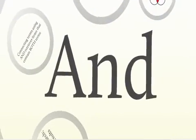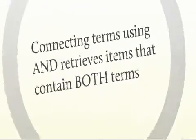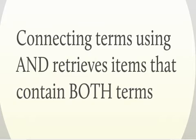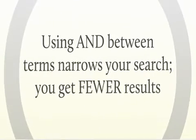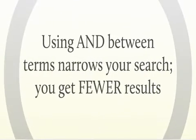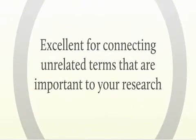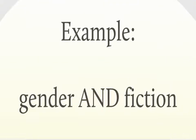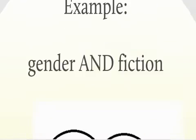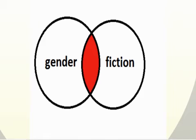AND functions in almost the opposite way. Connecting terms using AND retrieves items that contain both terms. Using AND between your terms narrows your search and you get fewer results. AND is excellent for connecting unrelated terms that are both important to your research. For example, 'gender AND fiction' will retrieve results that contain only both terms.